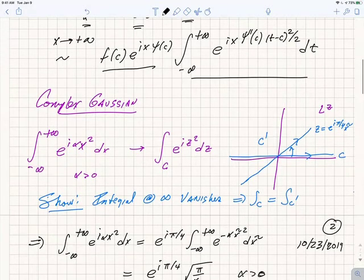Let's talk a little bit about the complex Gaussian integral, the integral from minus infinity to plus infinity of e^(iαx²). Let's take the example that α is greater than zero.